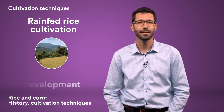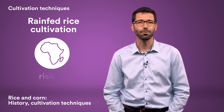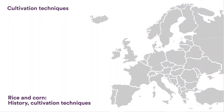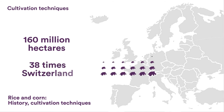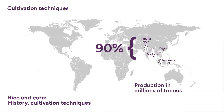Rain-fed rice cultivation predominates in areas with limited water resources, in Africa for example. Fields are watered by rainwater or groundwater and hence require less development. As the yield depends on rainfall, rain-fed rice cultivation faces the risk of droughts. Throughout the world, there are approximately 160 million hectares of land allocated to rice cultivation, equivalent to 38 times the surface area of Switzerland. Asia produces some 90% of the world's rice, including 30% in China alone.